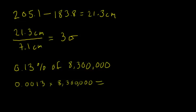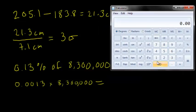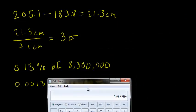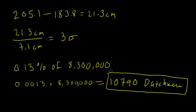And when we do that, we'll bring in the calculator here. So 0.0013 times 8,300,000. And I find that the answer is 10,790. And the proper units here would be Dutchmen. And that is how we solve example 9.4.